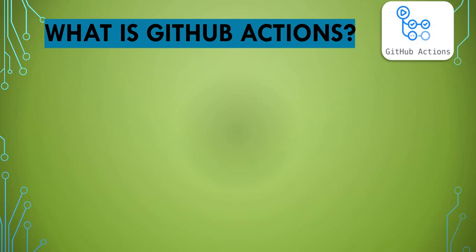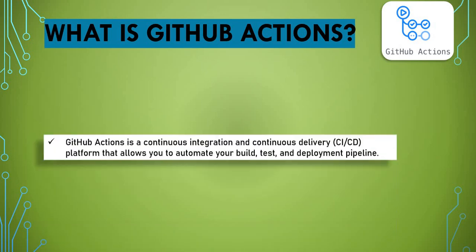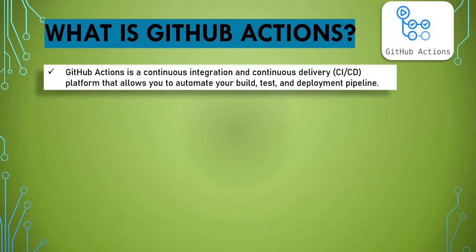As mentioned, we'll start with what GitHub Actions is. You know CI/CD — continuous integration and continuous delivery. You might be using Jenkins, GitLab CI, or other CI/CD platforms. Similar to those, GitHub Actions is also a continuous integration and continuous delivery platform that allows you to build, test, and deploy your pipeline.